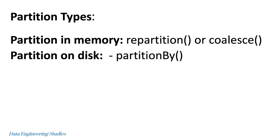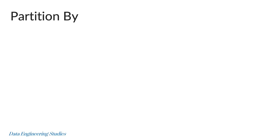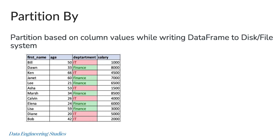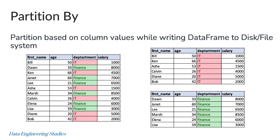We will see practical examples of all the partition types. The partitionBy function is used to partition based on one or more column values while writing the DataFrame to disk. Let's take a DataFrame which has 12 records with columns: first name, age, department, and salary. This data has two departments — IT and Finance. When passing department to the partitionBy function, we get the partition based on department.